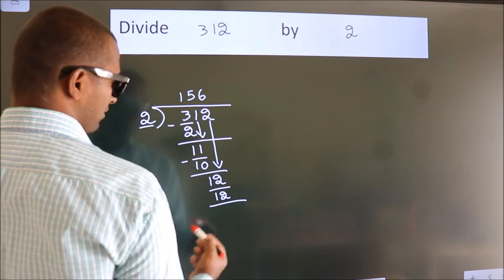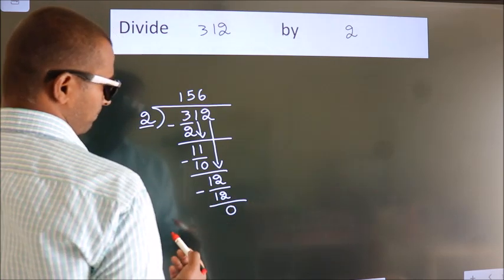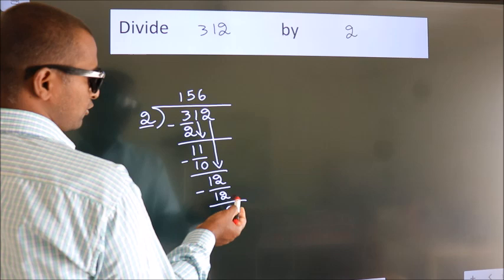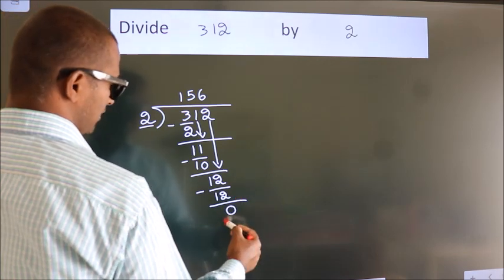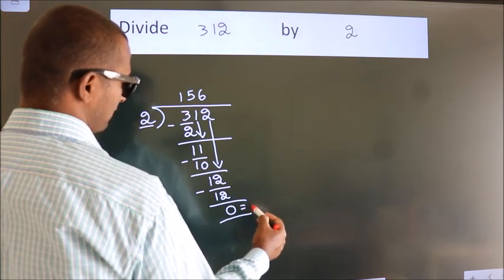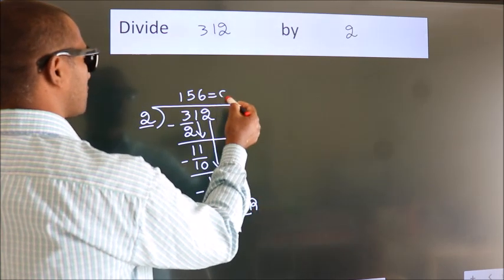Now we subtract. We get 0. No more numbers to bring down. So we stop here. This is our remainder. This is our quotient.